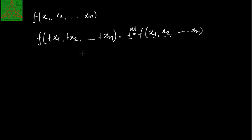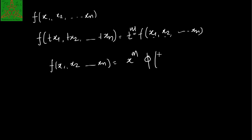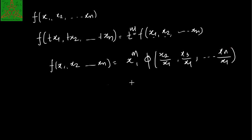This expression can also be written as f(x₁, x₂, ..., xₙ) = x₁ᵐ·φ(x₂/x₁, x₃/x₁, ..., xₙ/x₁). In that manner also we can represent the function and say that f is a homogeneous function of degree m in variables x₁, x₂, ..., xₙ.